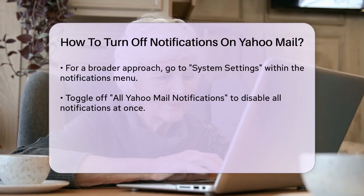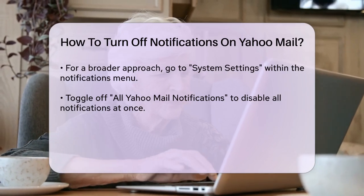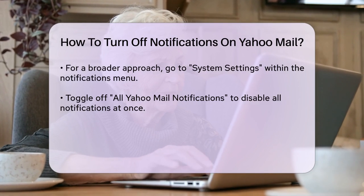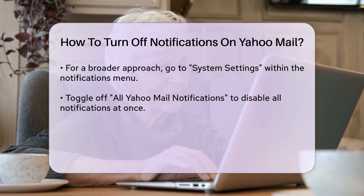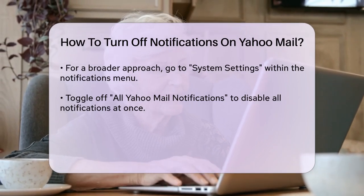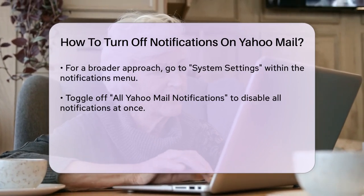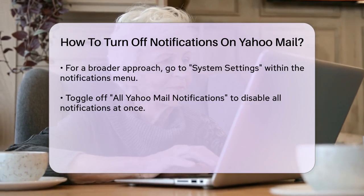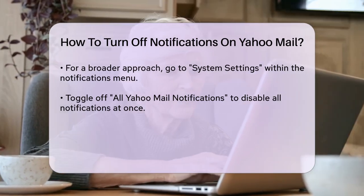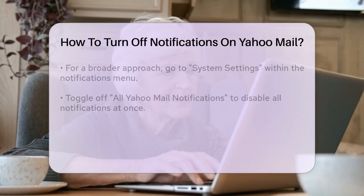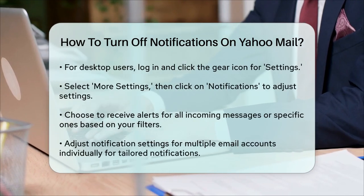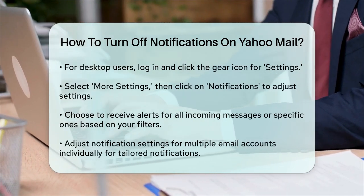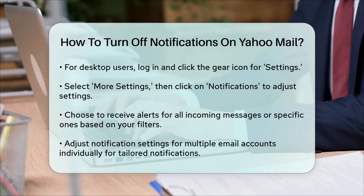If you're using the desktop version, the process is similar. Log into your Yahoo Mail account and navigate to the settings by clicking on the gear icon. Select More Settings, then click on Notifications. Here, you can choose to receive alerts for all incoming messages, or just specific ones based on filters you've set up.